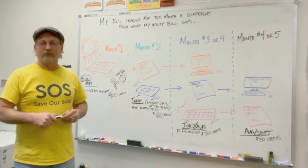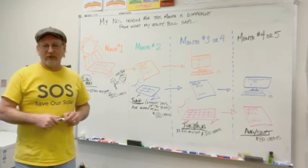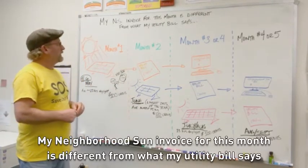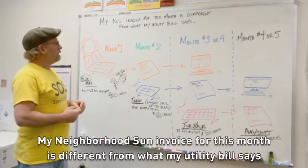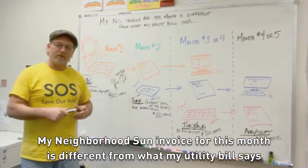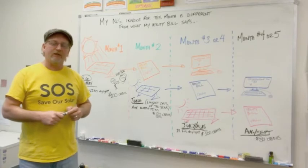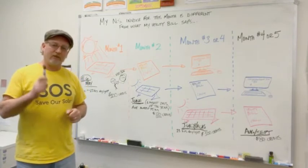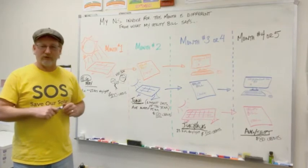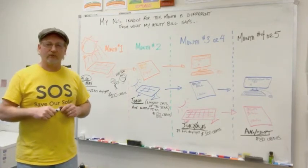We get a question from people all the time on the phone. The question essentially is, my Neighborhood Sun invoice for this month is different from what my utility bill says. There is a very logical explanation, but it's not intuitive. That's one of the reasons we wanted to make this video, because it does make sense once it's explained and it's easier explained with visuals.